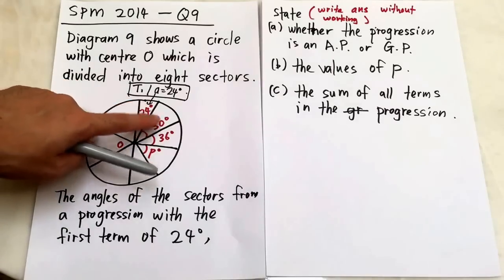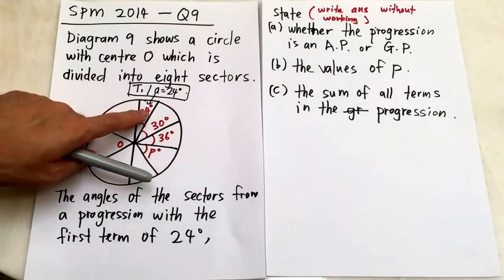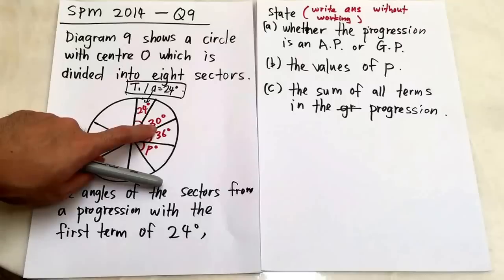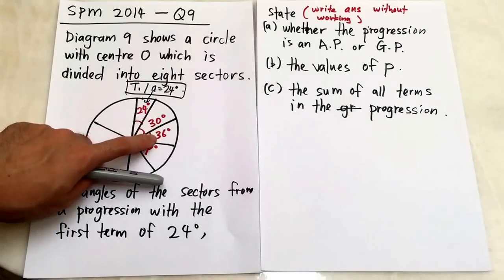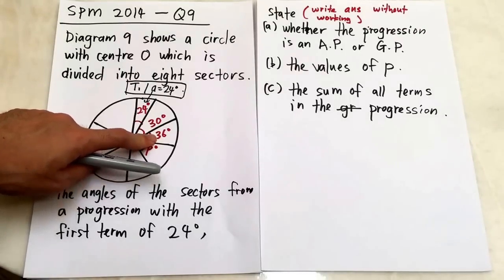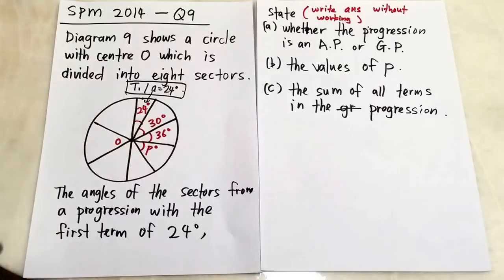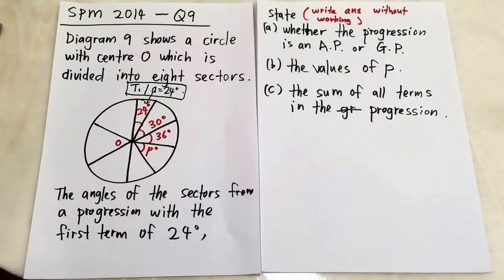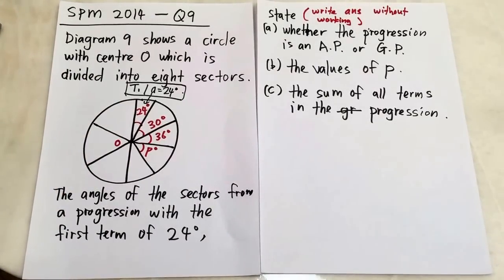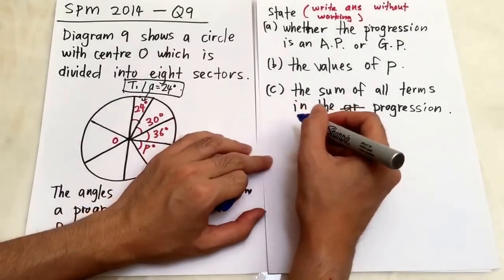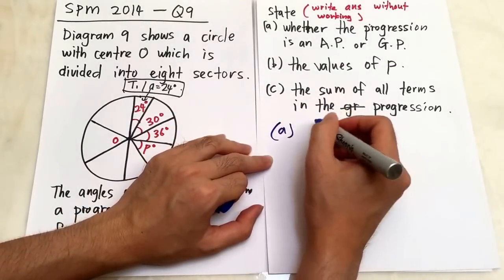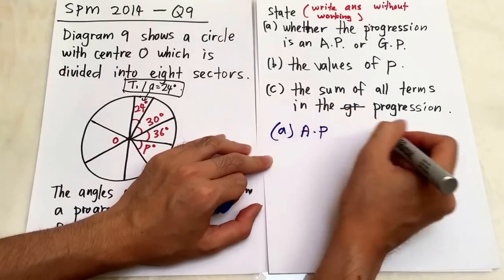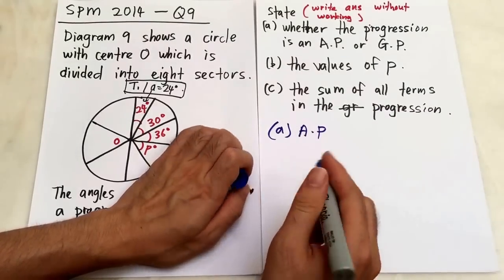But how do I know? You can see from the first angle to the second angle, it's plus 6 degrees. Second angle to third angle, it's plus another 6. So it continues plus 6 — that's arithmetic progression. So in an exam, I would write: A — arithmetic progression. Of course, you have to write the full term.